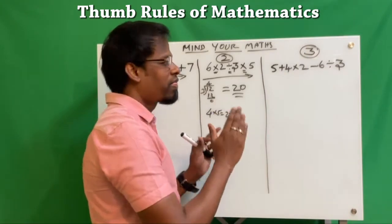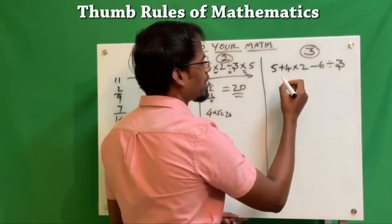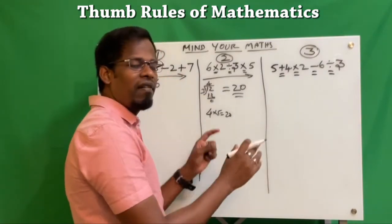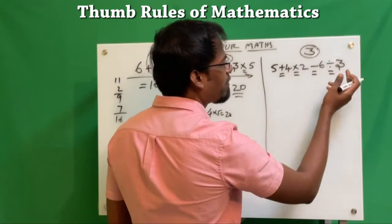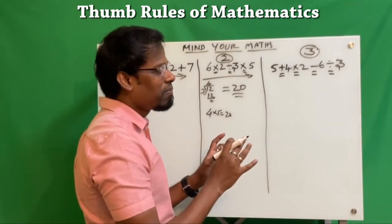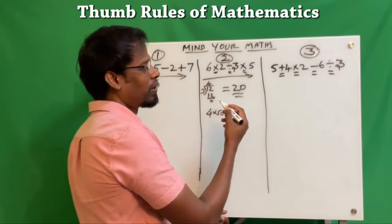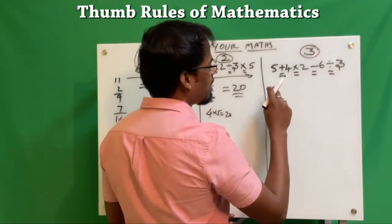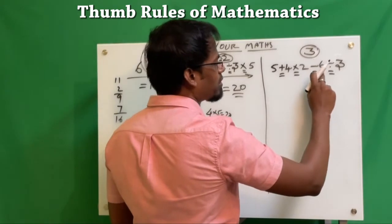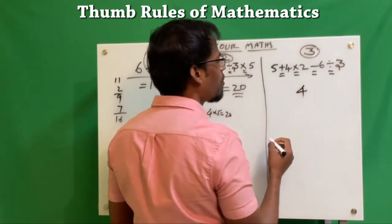Now let's go to the third type of problem, where you have all four operations — addition, subtraction, multiplication, and division. This is where most people get confused. Some people might say: just go from left to right. In that case, 5 plus 4 is 9, 9 times 2 is 18, minus 6 is 12, 12 divided by 3 is 4. So answer one is 4.